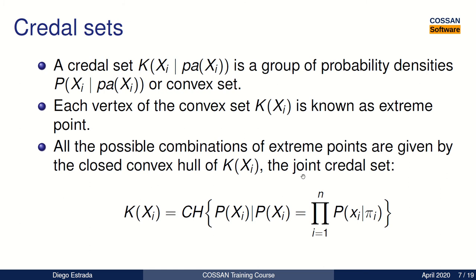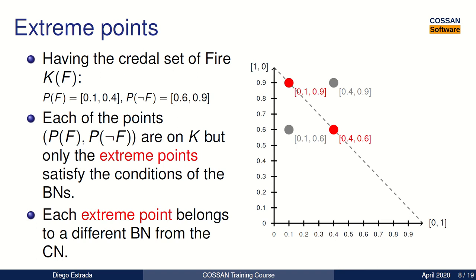To understand this concept better, consider the following example. Imagine that we have a node in our Credal Network called FIRE, and that node has two states: TRUE and FALSE. The Credal set is given as the interval probabilities of FIRE being TRUE between 0.4 and 0.9, and FIRE being FALSE between 0.6 and 0.9.